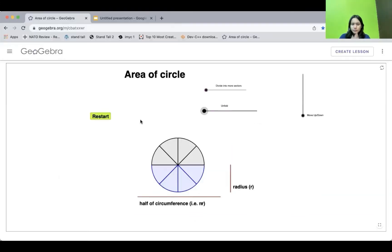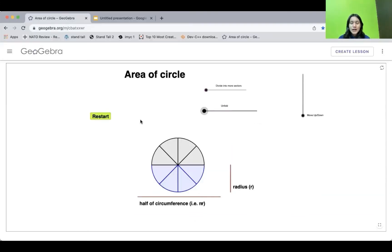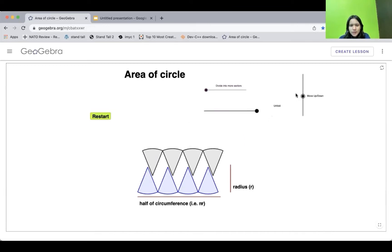So now we are here at GeoGebra. Now we can observe that the circle is divided into eight different sectors. And when we unfold the sectors and reassemble it, then yes, again, a bare region of parallelogram.